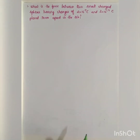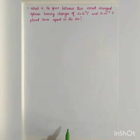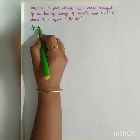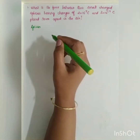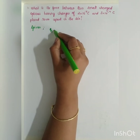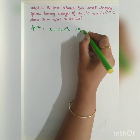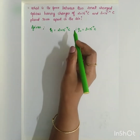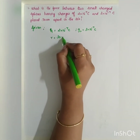The question asks: what is the force between two small charged spheres having charges of 2×10⁻⁷ coulomb and 3×10⁻⁷ coulomb placed 30 centimeters apart in air? Given: charge Q1 = 2×10⁻⁷ coulomb, charge Q2 = 3×10⁻⁷ coulomb, and the distance R = 30 centimeters.